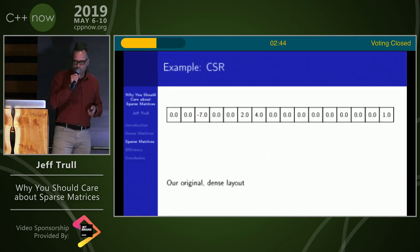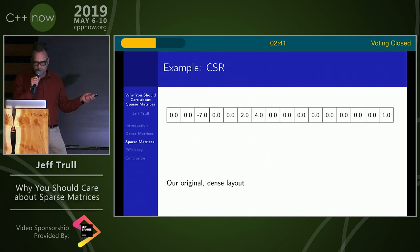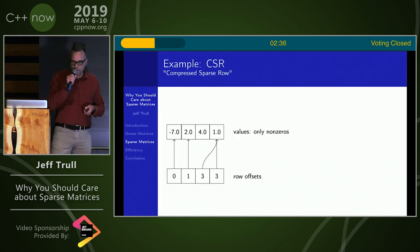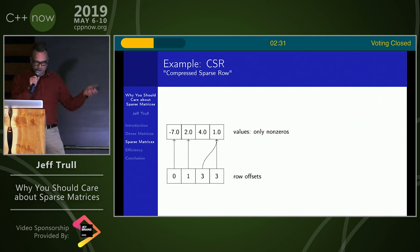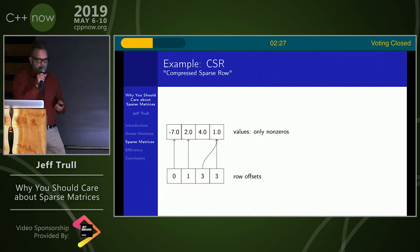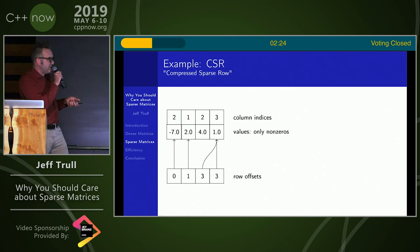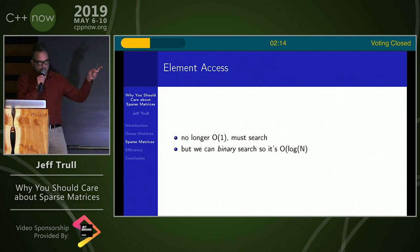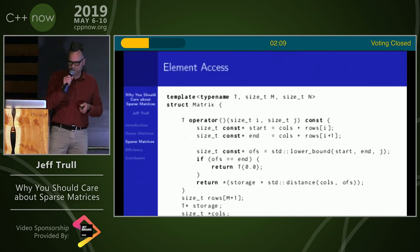How do we squeeze out zeros from our layout? Starting from the original dense matrix and row offsets, if we take all the zeros out and keep the row offsets pointing to the beginnings of the rows in the squashed layout, then we don't know exactly which columns we took, so we have to add column indices as well. This gives us something called compressed sparse row format. Element access is no longer constant time, but we can binary search because the column indices are in sorted order, so we end up with log time access instead of constant time.